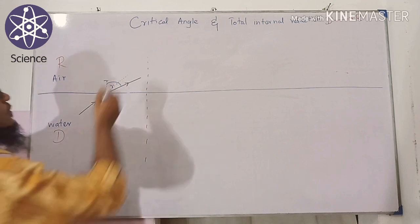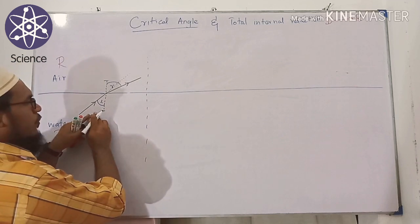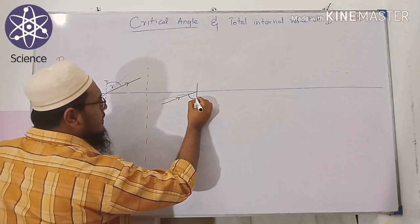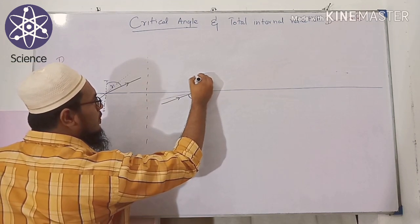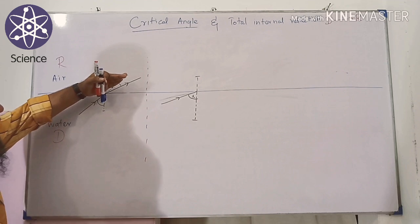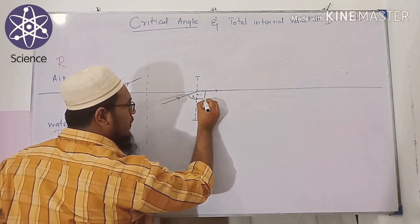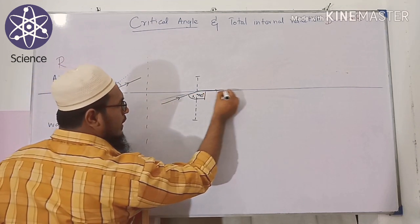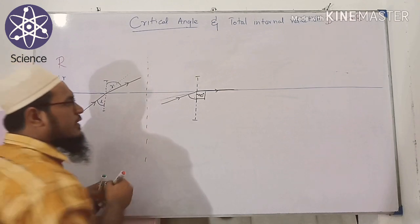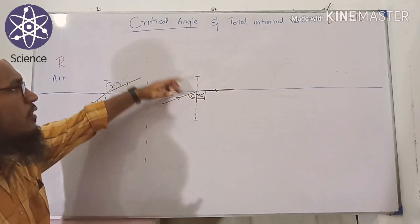That situation — where the incident ray is increased to the point where the refracted ray travels exactly along the interface at 90 degrees from the normal — is called the critical angle. The incident angle at that point is the critical angle. It is the maximum angle of incidence for which refraction can still occur.